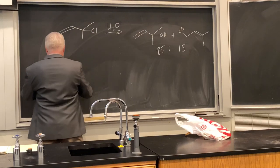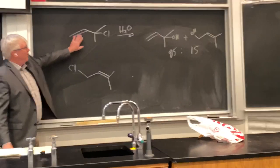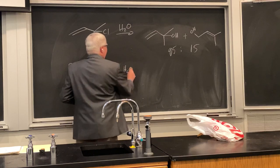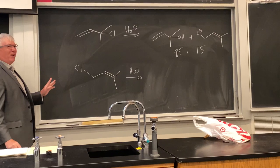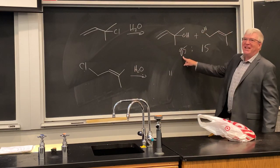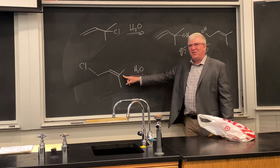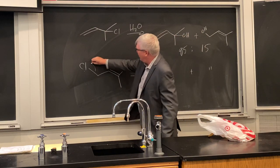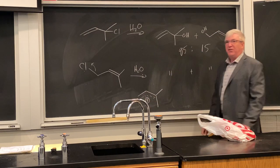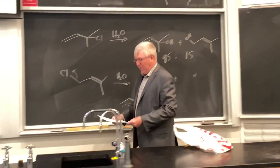This is interesting because we can take the isomeric allyl chloride — a primary chloride rather than tertiary — and react it under the same conditions. The intermediates are the same allylic carbocation in both cases. The products are identical: 85% tertiary alcohol and 15% primary alcohol, the same 85:15 ratio. This is because both starting materials generate the same delocalized allylic carbocation resonance hybrid, where the positive charge can be at either end.